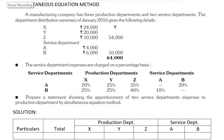Hello all. In today's lecture we are going to learn how to distribute the expenses of a service department to the production department under the simultaneous equation method. In the question, the expenses of X, Y, and Z departments are 24,000, 20,000, and 10,000, making total production department expenses of 54,000. The service department expenses are 4,000 for service department A and 6,000 for service department B, totaling 10,000, which we have to distribute among production departments X, Y, and Z.